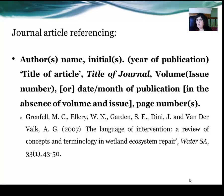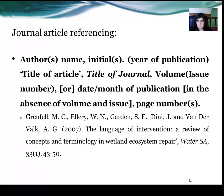For a journal article reference, you have the author's surname, initial, year of publication, title of article in inverted commas, then the title of the journal in italics, the volume (some use 'Vol.' but it's not necessary), then the issue number or date/month of publication in the absence of volume and issue, comma, page numbers, and a full stop.